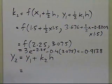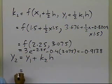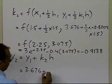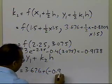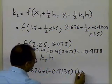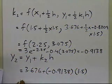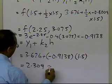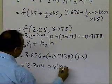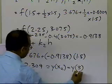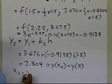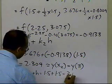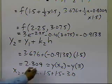So k2 is minus 0.9138. Now y2 equals y1 plus k2 times h: y1 is 3.676, k2 is minus 0.9138, and h is 1.5, giving y2 equal to 2.304. This is the approximate value of y at x2, which equals x1 plus h, that is 1.5 plus 1.5 equals 3.0.